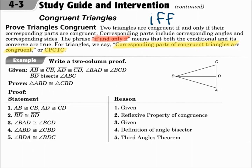When you're trying to prove that triangles are congruent, make sure that you match up all of the side pairs and all of the angle pairs. Once you have done that, then you can say that the triangles are congruent.